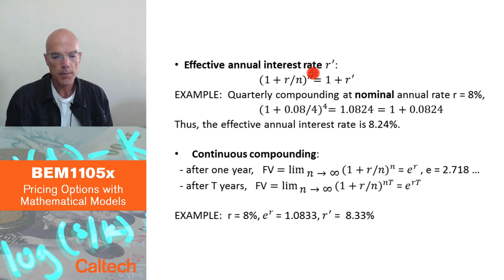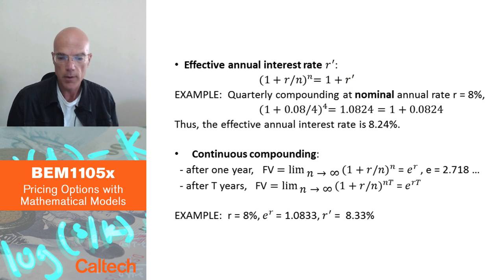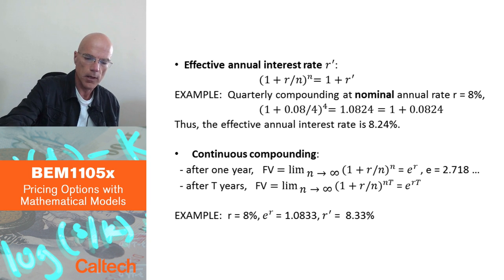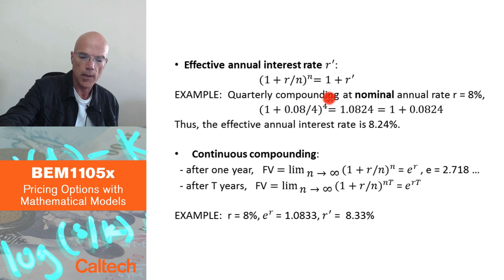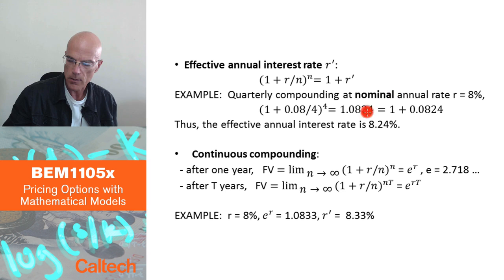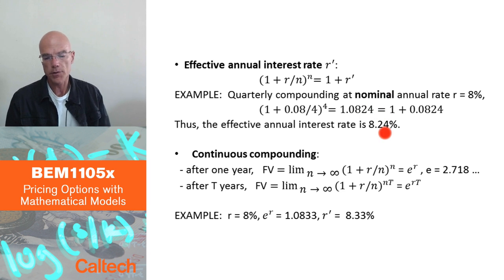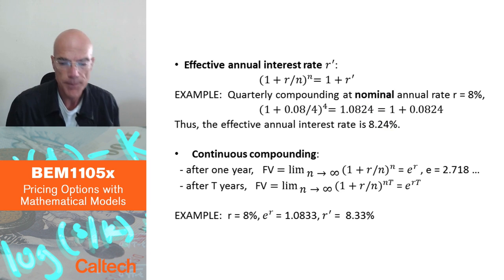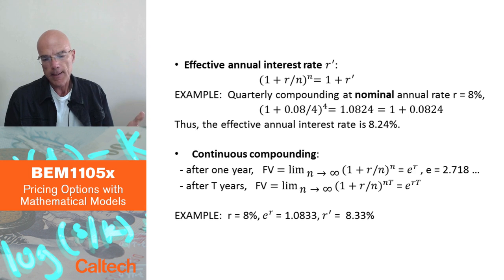For example, quarterly compounding at a nominal annual rate of 8% means after one year you have (1 + 8%/4)^4, which equals 1.0824. This means the effective annual interest rate is 8.24% — that's how much interest you actually receive on the dollar during one year.